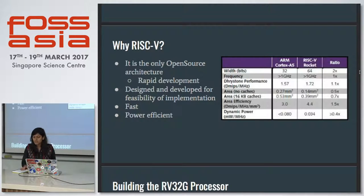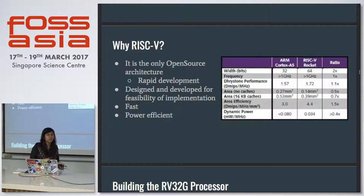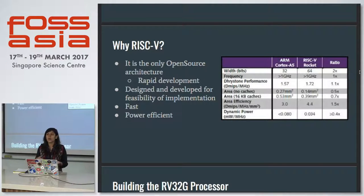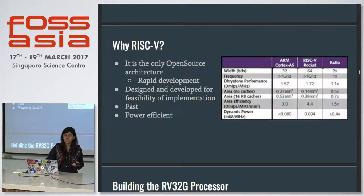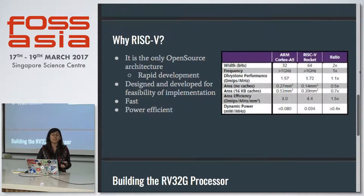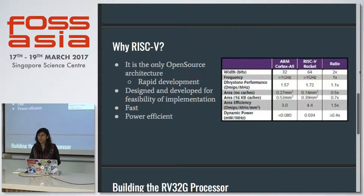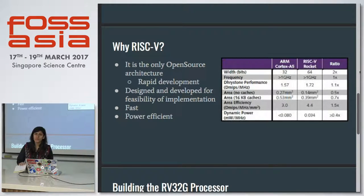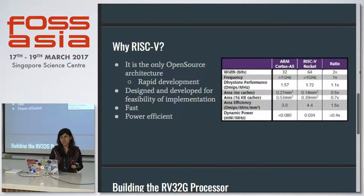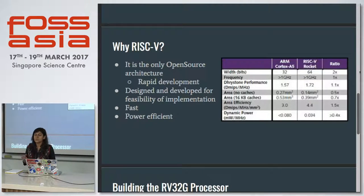Now, why RISC-V? The main advantage of RISC-V is that it is the only open source instruction set architecture. This allows you to customize it, develop it according to your needs, and add features accordingly. The base model — the integer base instruction set — is a very basic, simple model with around 40 instructions. Many designers say that when compared to other commercial architectures, CPU design using RISC-V is very fast and consumes very little area.